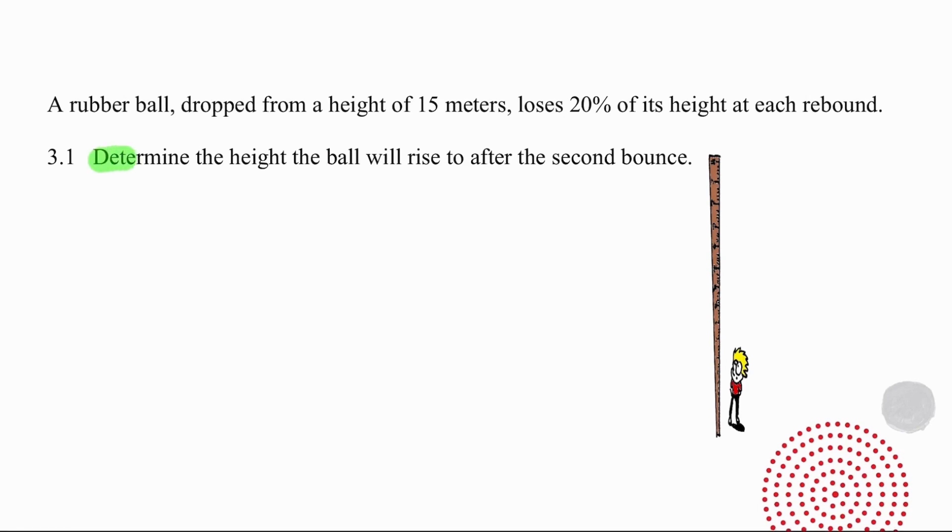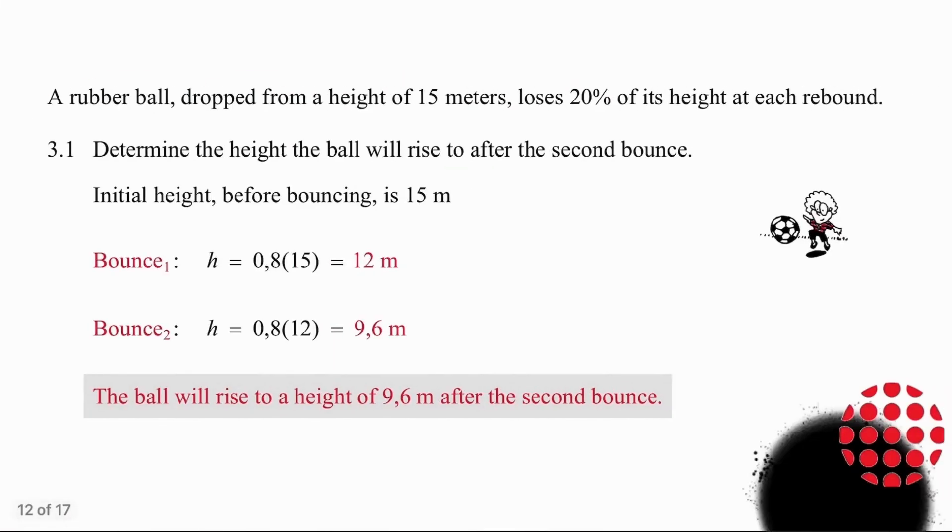In question 3.1 we need to determine the height the ball will rise to after the second bounce. So we are systematically going to work out the height of the ball after the first bounce and then after the second bounce. Don't use 20% because 20% is what is lost. Take the 20%, work out what is retained and work out the height of the second bounce. Essentially you need to focus on the fact that 80% is retained. So you take 0.8 of the height the ball started at and your first bounce height will be 12 meters. Then you take 80% of 12 meters and your second bounce will have a height of 9.6 meters.